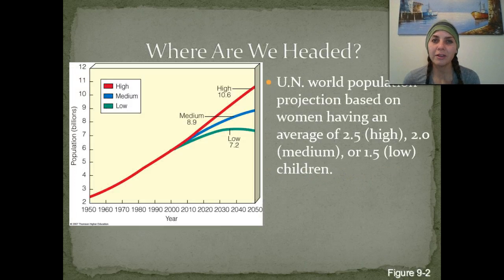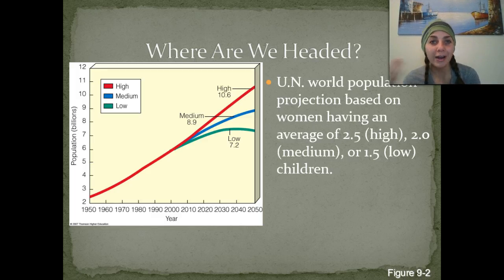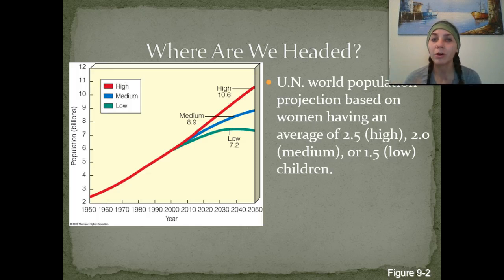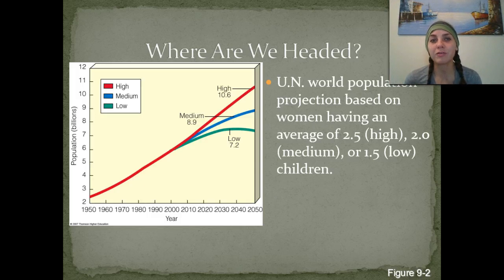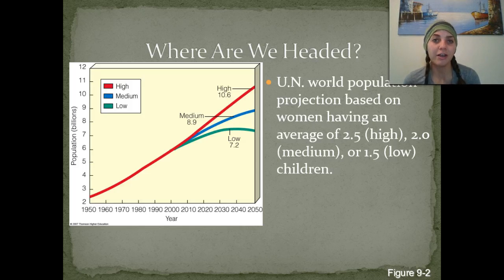Looking at this graph, the United Nations made some projections of what's going to happen with human population growth based on if women had a high reproductive rate, a middle-of-the-road reproductive rate, or a low reproductive rate. The high is basically predicting that each woman is going to give birth to 2.5 children. The medium is that the woman will give birth to 2 children, and the low is going to be if the woman gives birth to only 1.5 children.